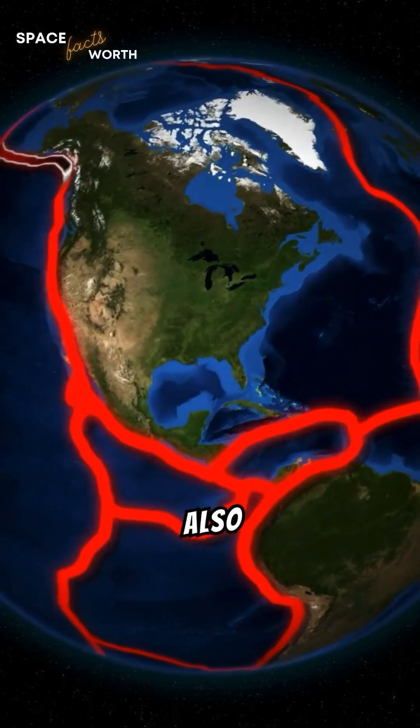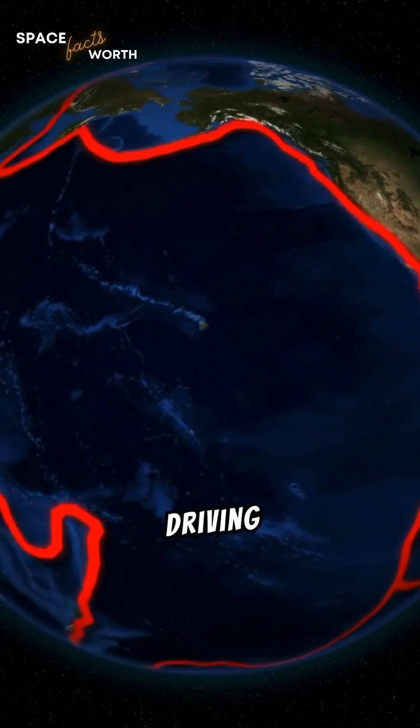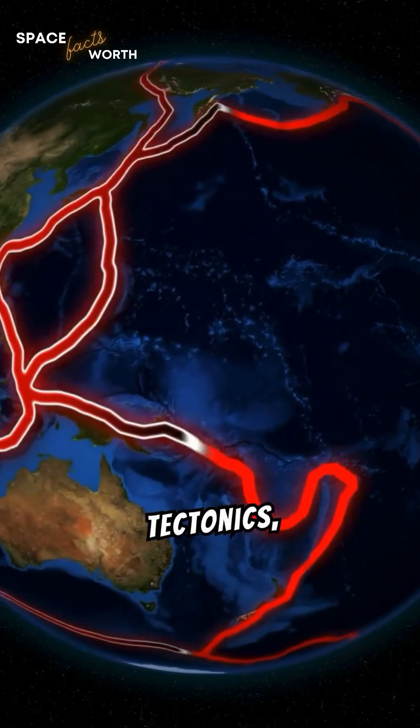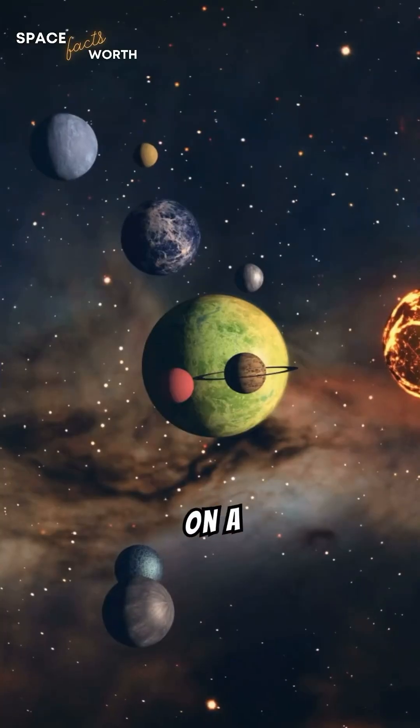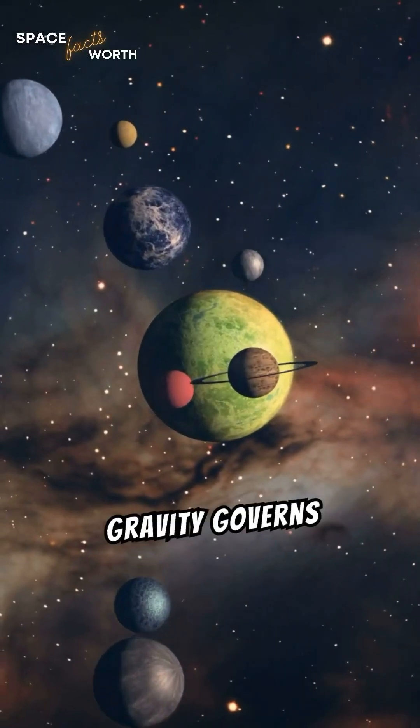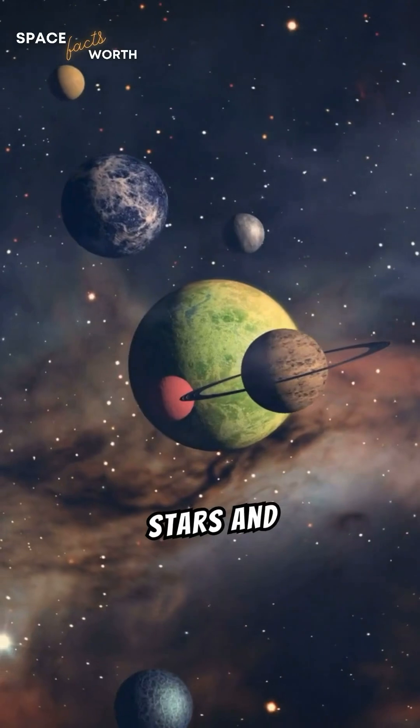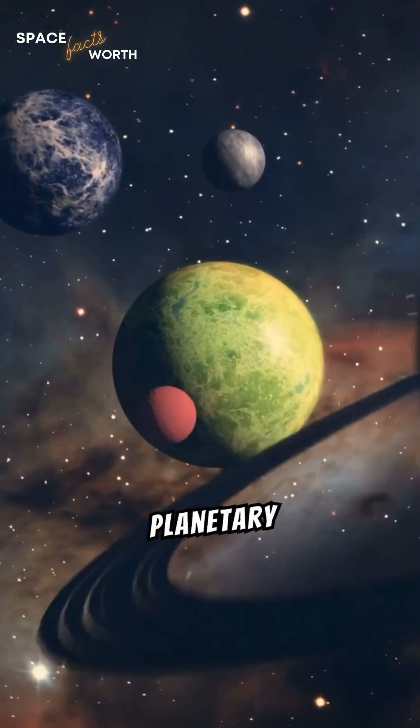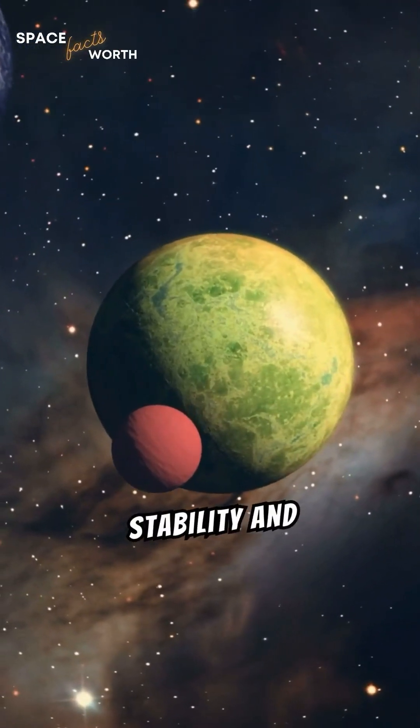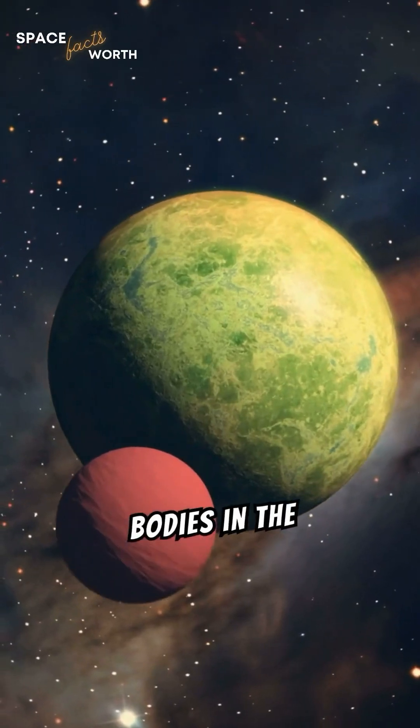Gravity also affects a planet's surface features, driving processes like erosion, tectonics, and volcanism. On a larger scale, gravity governs the orbits of planets around stars and the interactions within planetary systems, ensuring the stability and dynamics of celestial bodies in the universe.